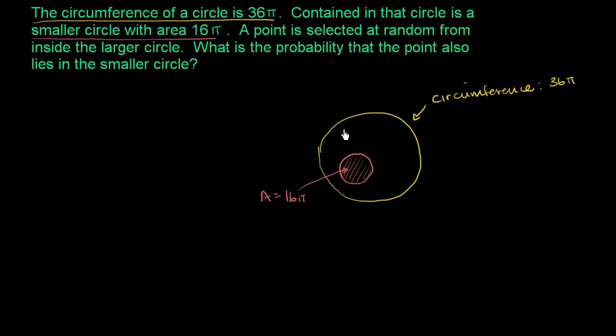And so when we talk about the probability that the point also lies in the smaller circle, we're really thinking about the percentage of the points in the larger circle that are also in the smaller circle. The probability is really just going to be the percentage of the larger circle that is the smaller circle. We really just have to figure out the areas for both of them, and it's really just going to be the ratios.